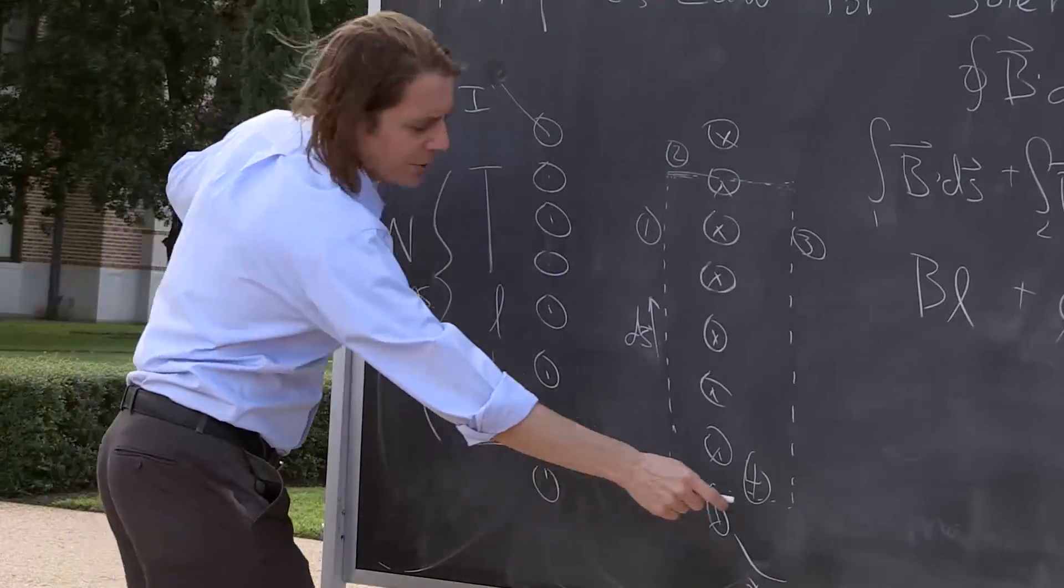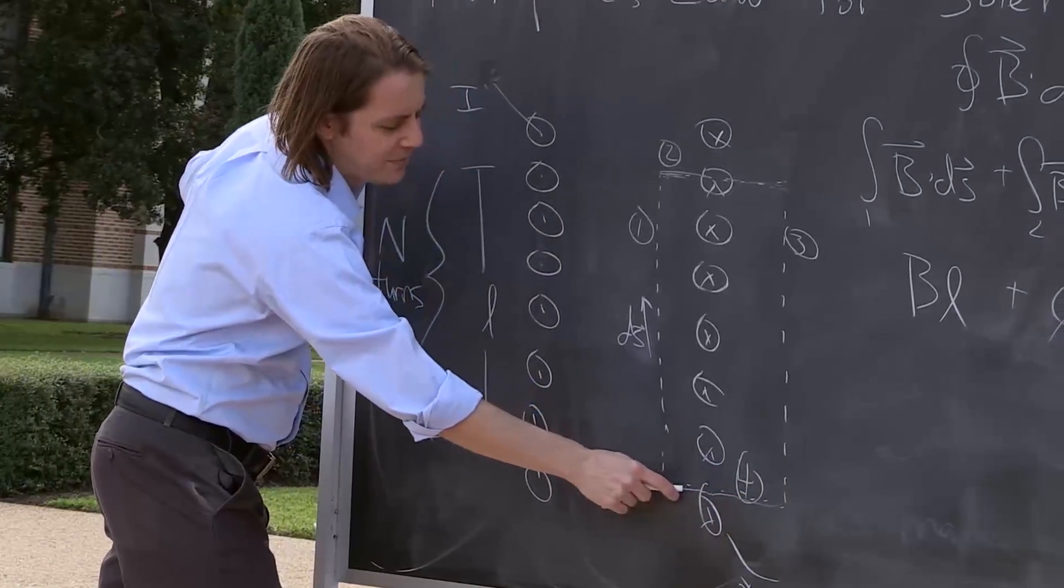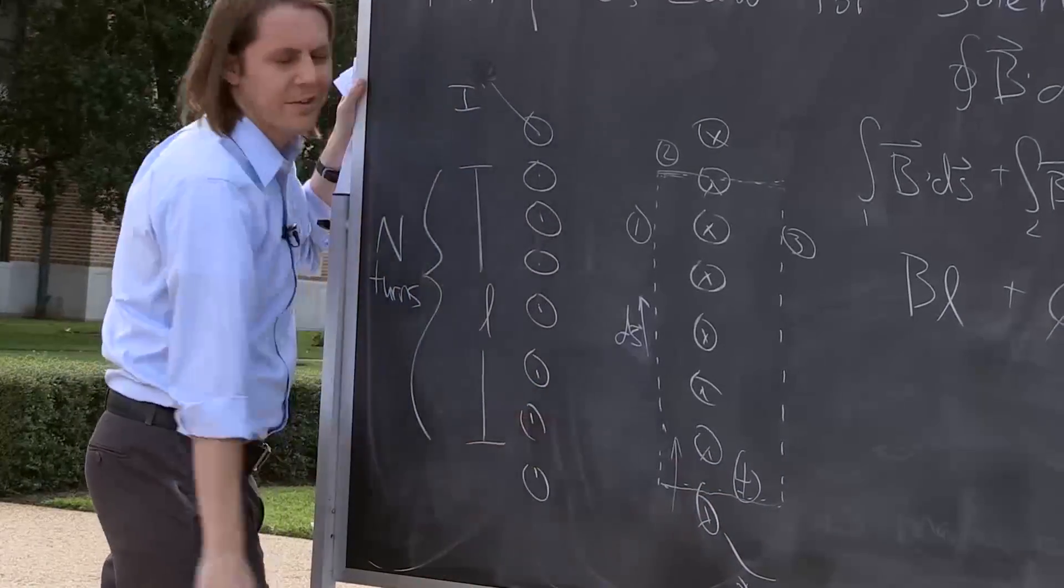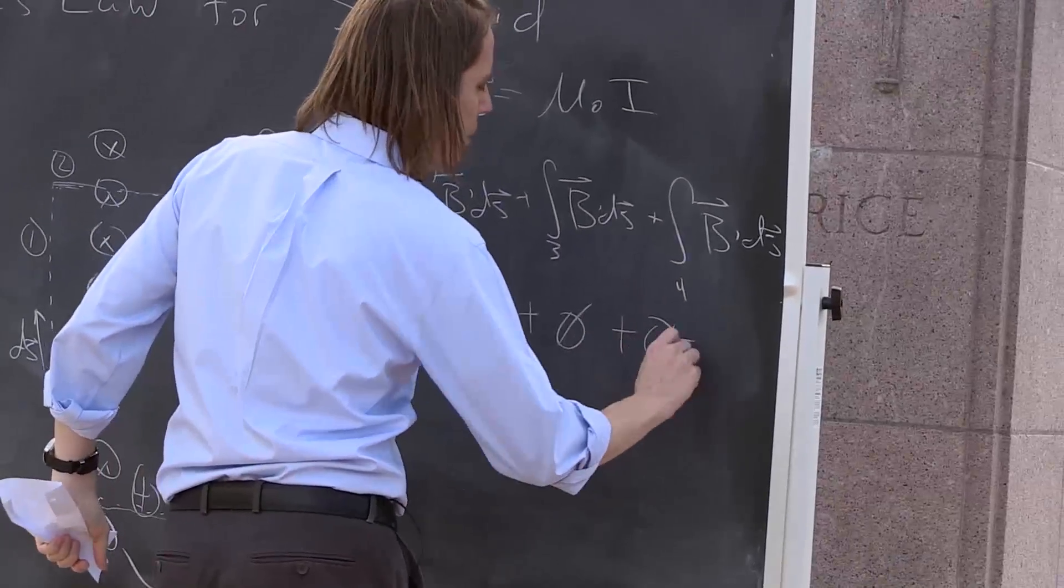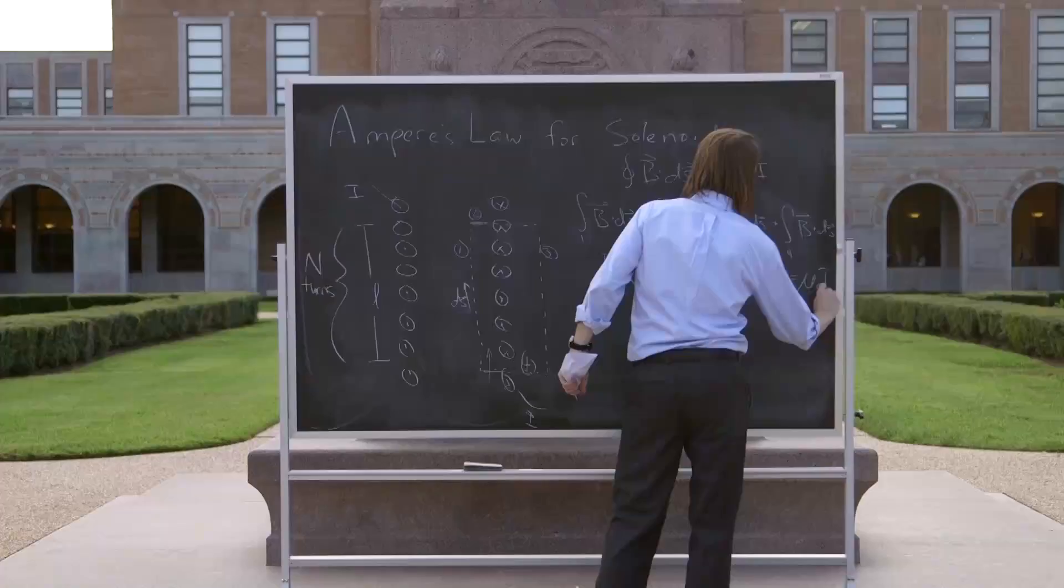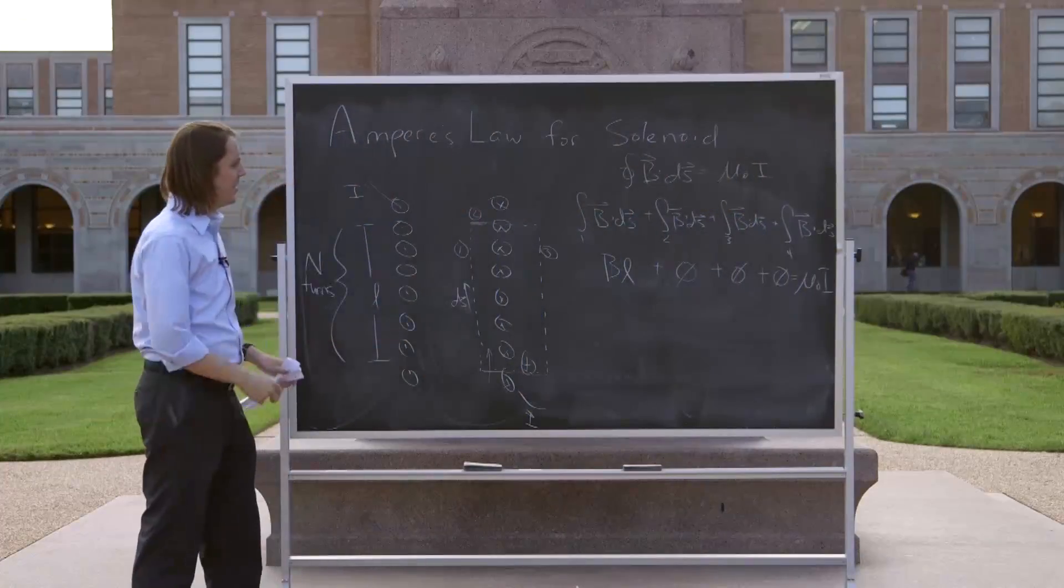And then finally, we come marching in here, out here. There's essentially nothing, no B field. And when you get in, there's a B field, but it's perpendicular to the dS's, so zero. So all the terms are zero, except B1. Only the term when you go along the inside of the solenoid.